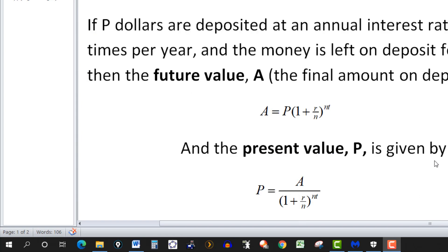Present value P is given by the second formula. We simply solve the first formula for P, and you get P equals the value of A, your future value, over this quantity here.